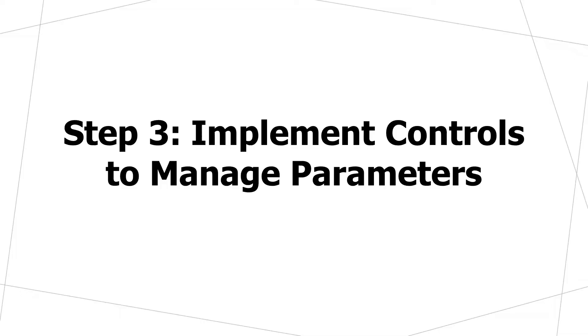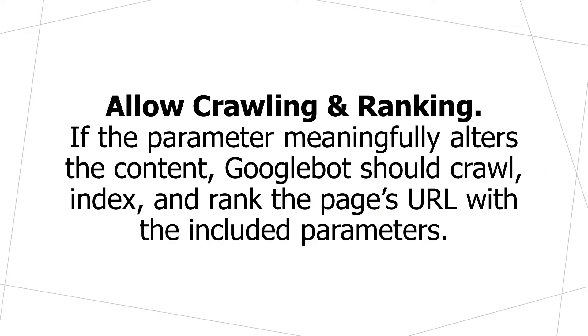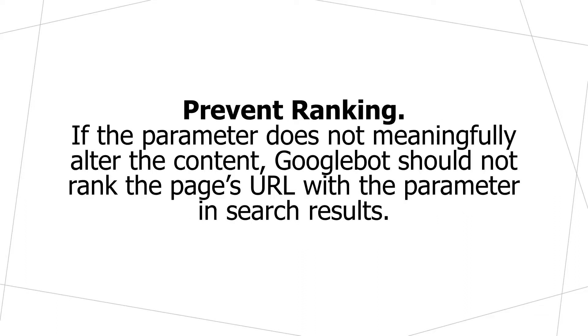Now that we've gone through every single parameter and determined what we should and should not do, the next and final step is to implement the controls necessary to manage those parameters. We need to look at what we're doing with crawling and what we're doing with indexing. We really have three options available to us. The first option is to allow crawling and ranking — if a parameter meaningfully alters the page's content, then Googlebot should crawl, index, and rank that URL. But that isn't always the case. Sometimes we want to prevent URLs containing certain parameters from ranking.